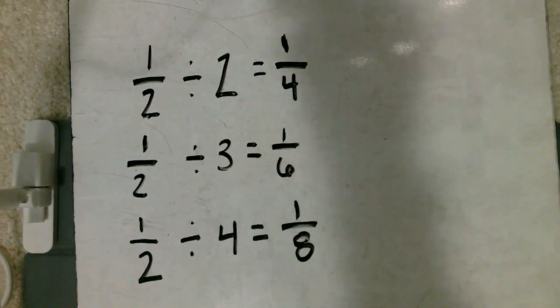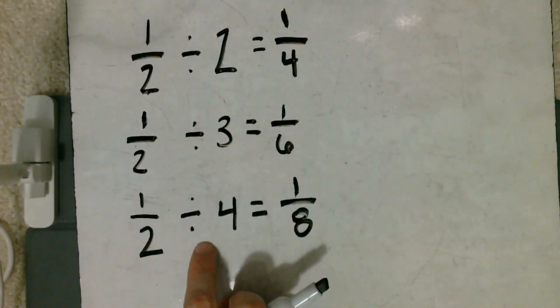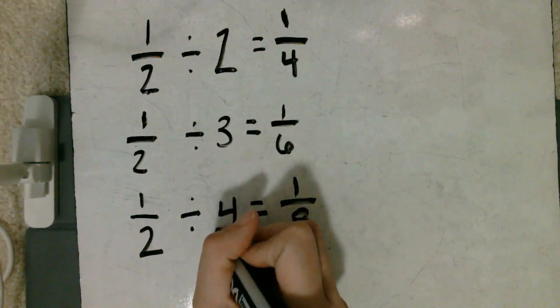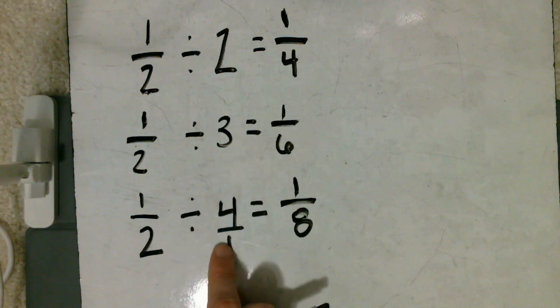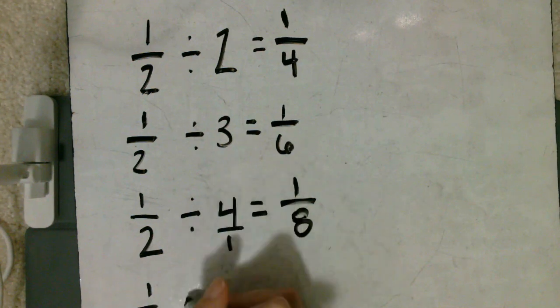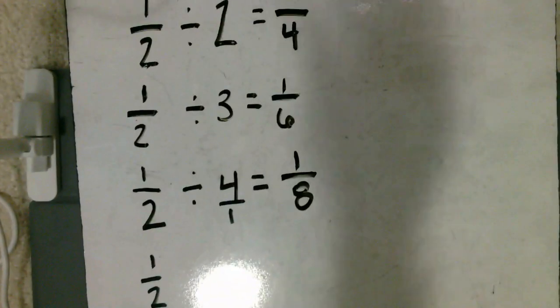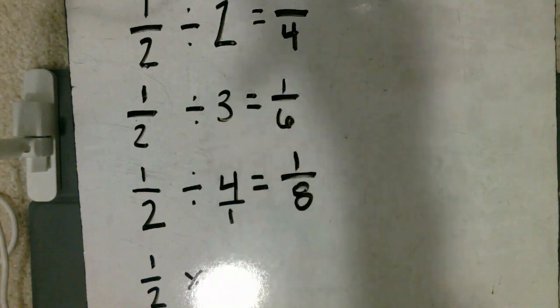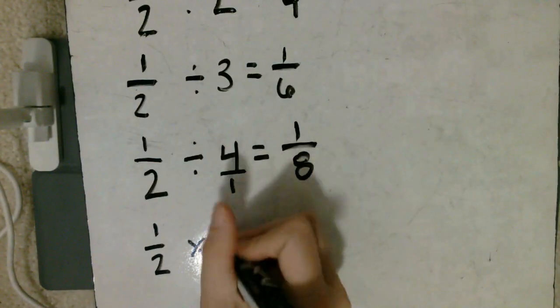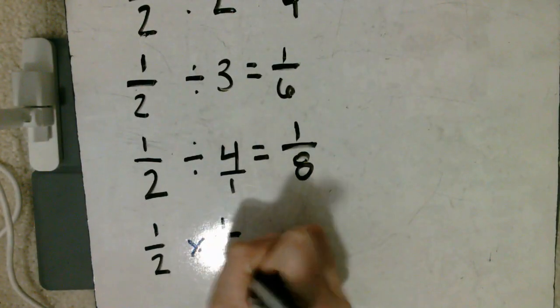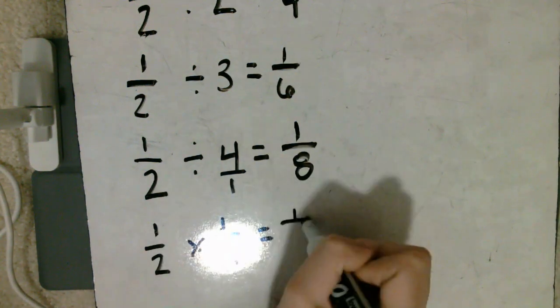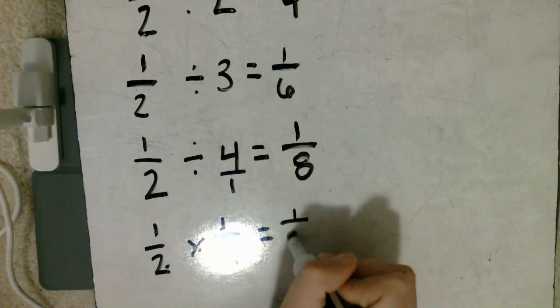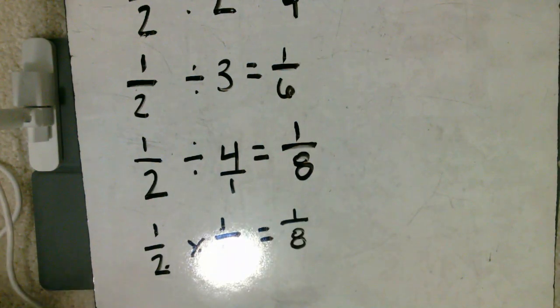If we were going to switch this operation right now as a division problem, we would leave one half the same, switch our division to multiplication, and flip one fourth around. Let's see if that gives us one eighth too. One times one is one, two times four is eight. It does. That confirms our pattern.